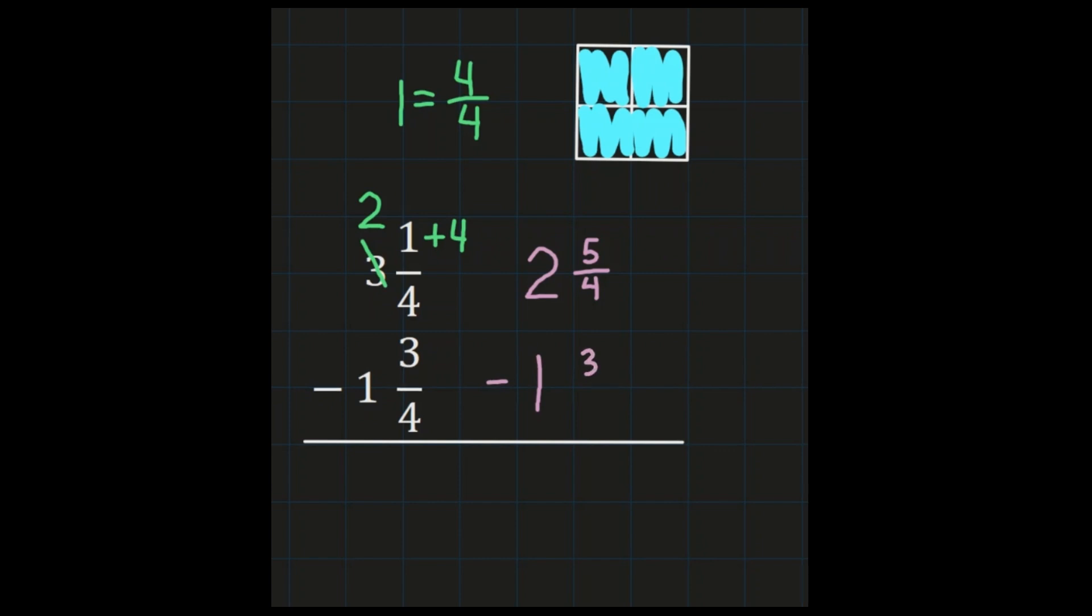And like we said a second ago, we already have common denominator of 4ths. So now I can subtract 5 minus 3. 5 minus 3 is 2. My common denominator of 4 remains the same. And 2 minus 1 is 1.